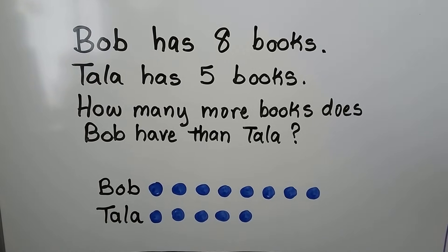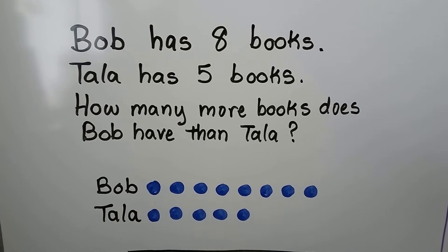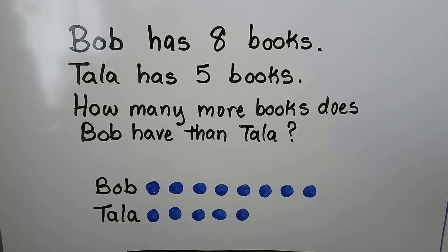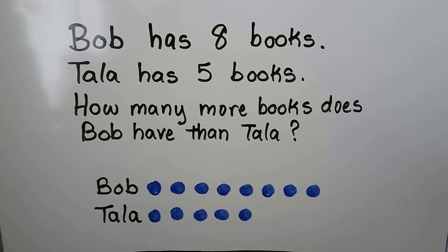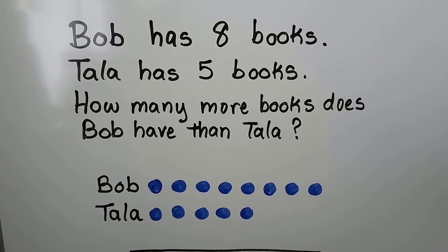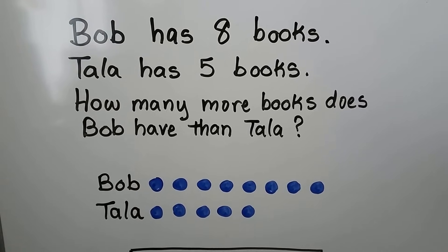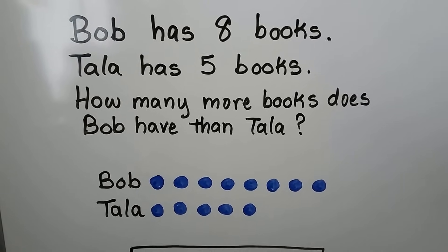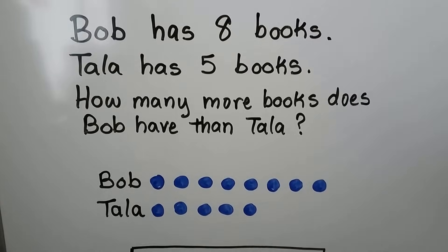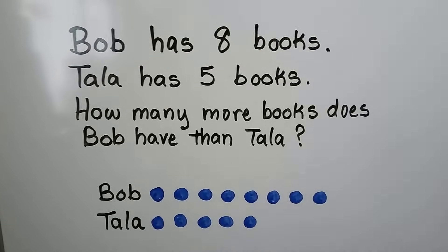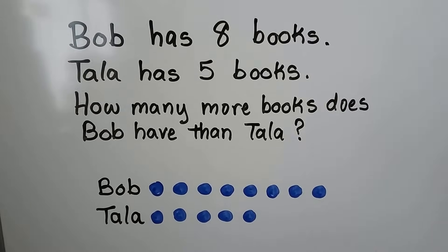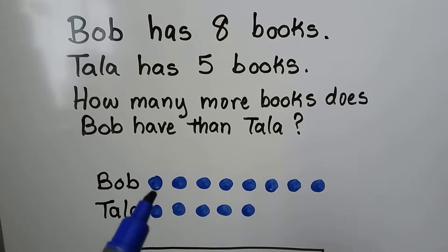Bob has eight books. Tala has five books. How many more books does Bob have than Tala? We make dots for how many books they have. Each dot is one book.